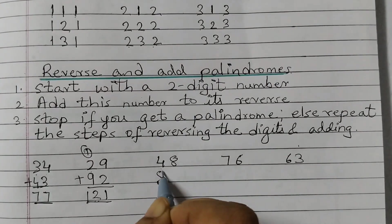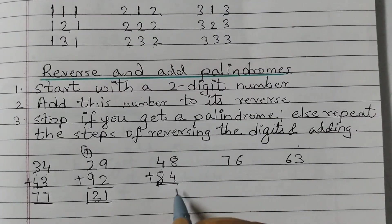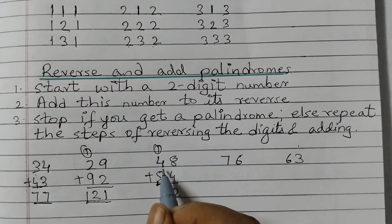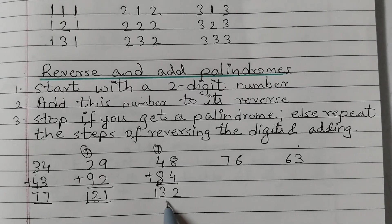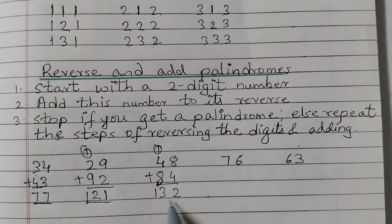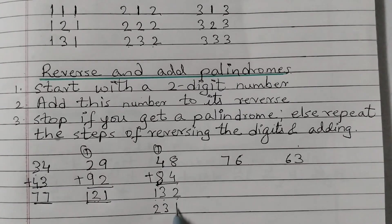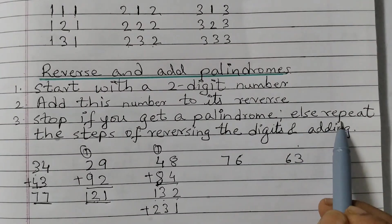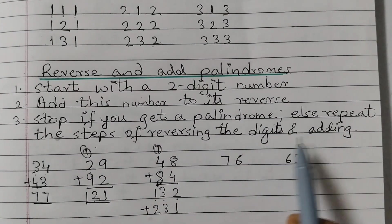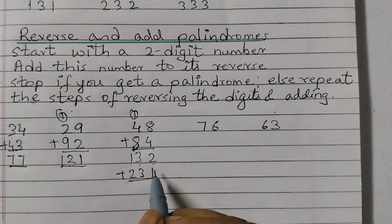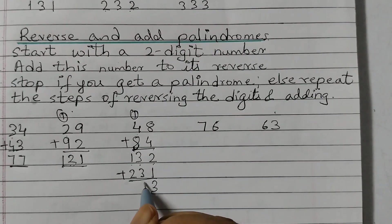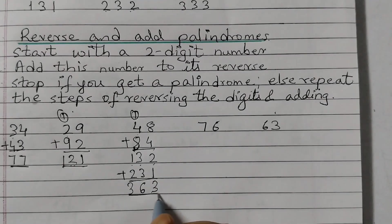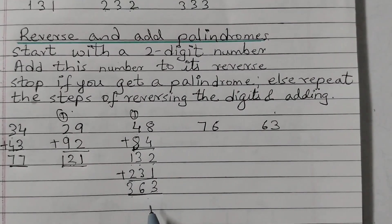Now 48. Its reverse is 84. Adding: 8 plus 4 is 12, carry 1; 8 plus 4 plus 1 is 13 — so we get 132. That is not a palindrome, so we reverse 132 to get 231 and add again. 2 plus 1 is 3, 3 plus 3 is 6, 1 plus 2 is 3 — giving 363, which is a palindrome.